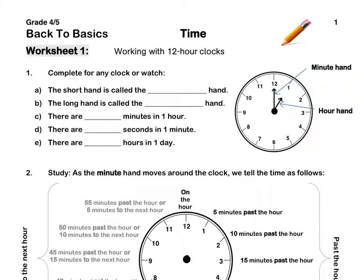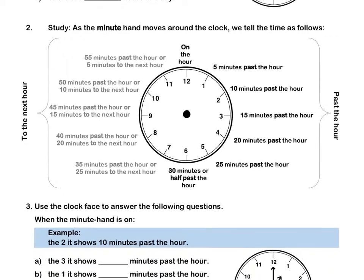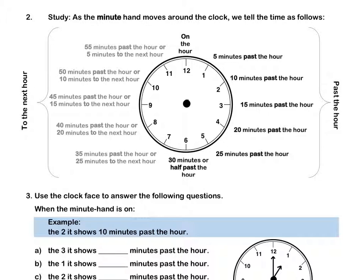Let's continue. As the minute hand moves around the clock, we tell the time as follows. When the minute hand is on the 12, it means that it is on the hour. So for instance, this would be 9 o'clock.